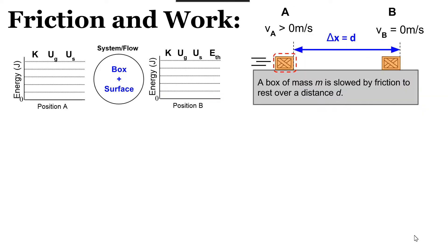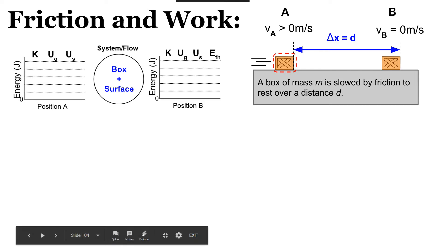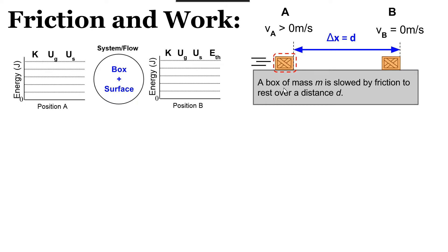Now let's look at a similar situation involving friction and work. Consider a box moving with some velocity greater than zero at position A, which naturally slides across a rough surface and is slowed by the force of friction to rest over some displacement D.